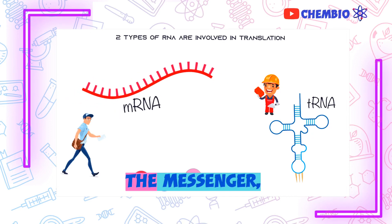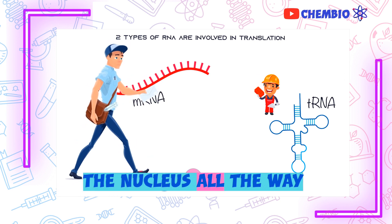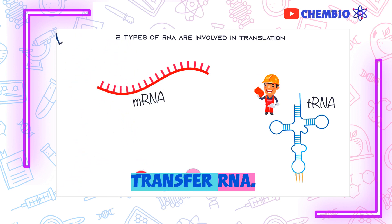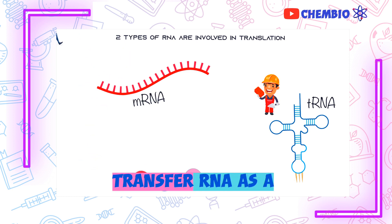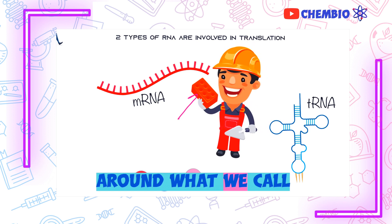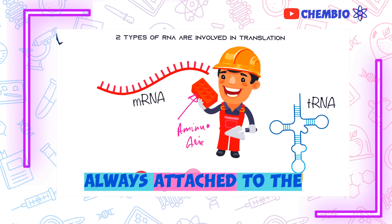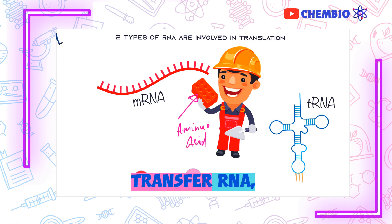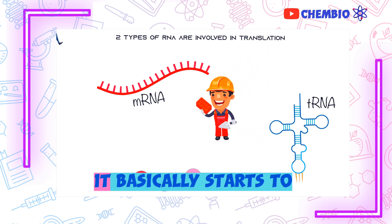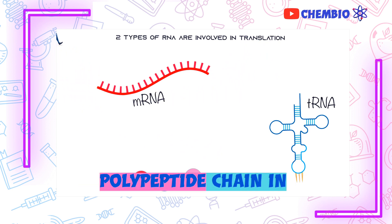Those two RNAs: the messenger RNA, which takes the message from the nucleus all the way to the ribosome, and the transfer RNA. Transfer RNA acts like a builder — it carries amino acids and basically starts to build the protein or the polypeptide chain.